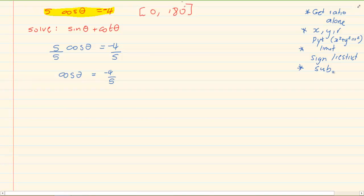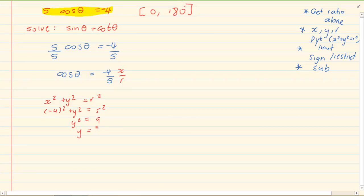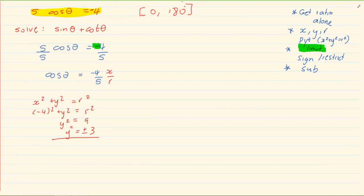When we are told to solve, we first get our ratio alone. So I got 5 cos theta is equal to minus 4. I divide by 5: cos theta is equal to minus 4 over 5. Now cos is x over r. Using Pythagoras I now solve for y. When we do Pythagoras we got y is equal to plus or minus 3.